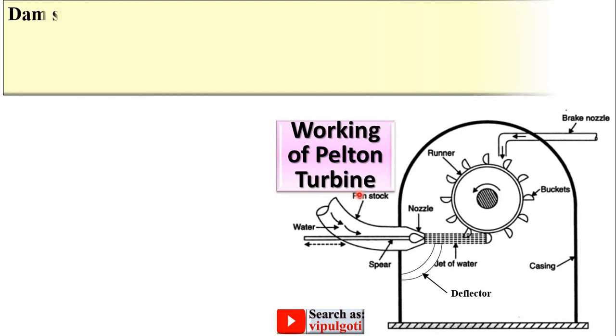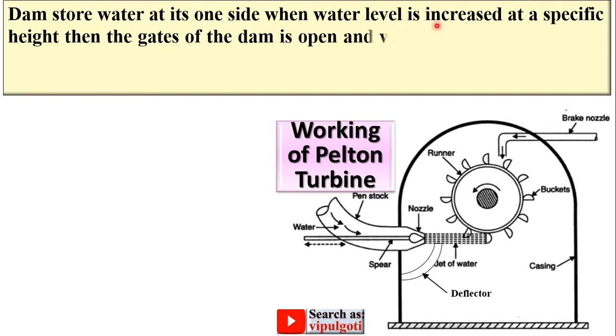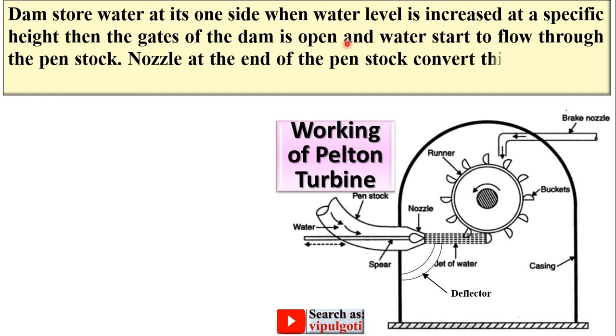Next: working of the Pelton turbine. Dams store water at one side. When the water level increases to a specific height, the gates of the dam open and water starts to flow through the pen stock. The nozzle at the end of the pen stock converts this high-speed water into a jet.